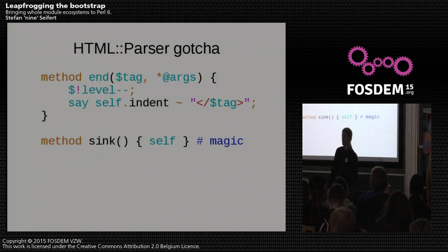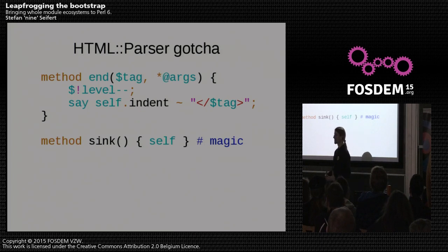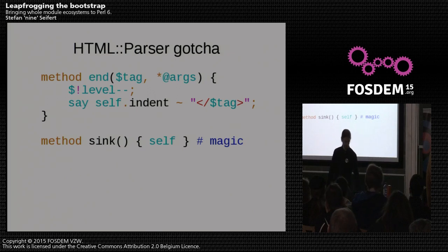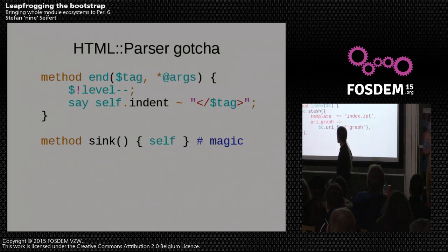Equipped with this knowledge and coming back to Catalyst, you would say it's just a matter of rinse and repeat — use Perl5::Parent again and we can write Catalyst controllers in Perl 6. And it would probably look like this.